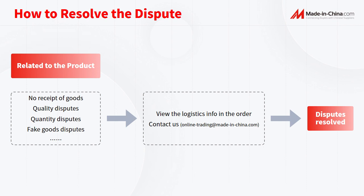For disputes over quality issues, quantity issues, and fake goods issues: once there is a dispute, please contact our platform via online trading at MadeInChina.com to provide evidence related to the product. We will contact the supplier as soon as possible and request them to actively resolve the dispute.